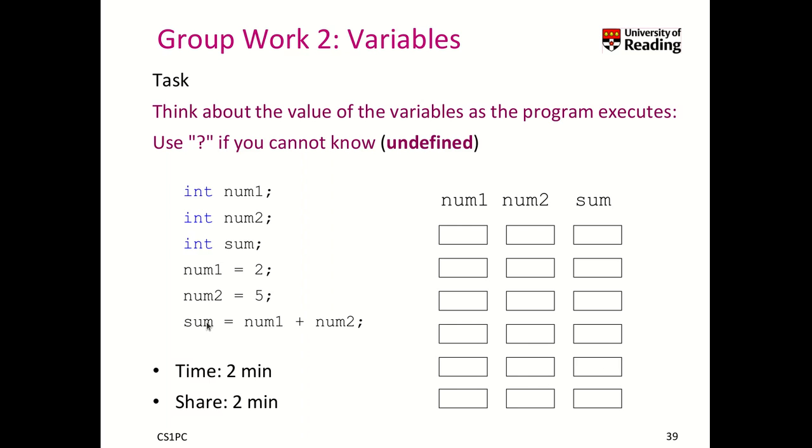Finally, we have to do the assignment here, which means when we do this assignment operator, sum becomes num1 plus num2. What is the result? Well, we look here at the table before, num1 was 2, num2 was 5, so the result is now 7. That gets assigned to sum.